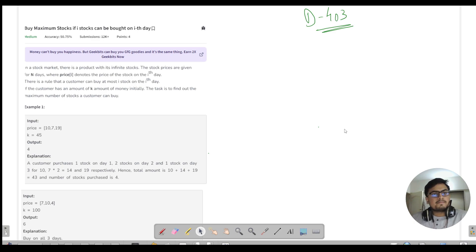We're given stock prices for n days where price[i] denotes the price of stock on the ith day. There's a rule that the customer can buy at most i stocks on the ith day. The task is to find the maximum number of stocks, and the customer is given an amount k initially.